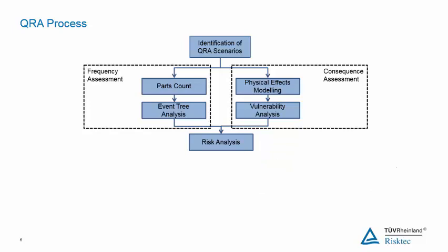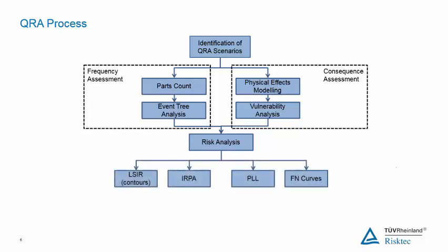Total risk is presented in terms of standard risk measures. This analysis produces various outputs — for example, location-specific individual risk, individual risk per annum, potential loss of life, and FN curves.